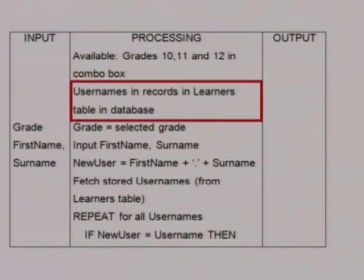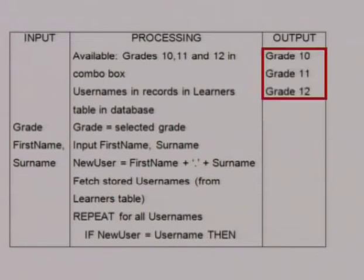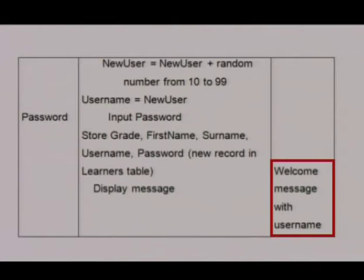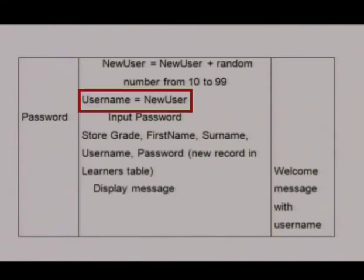Here it says we must fetch stored usernames from the learners table, so the usernames must also be available. Complete the output column — the user must not see all the usernames, so we don't add that to the output column. Show what the user must see after the processing has been done — display message. Notice that there is a variable named new_user that will be used during processing. It is very easy to see which variables must be declared as local variables: grade, first name, surname, password, new_user, and username.